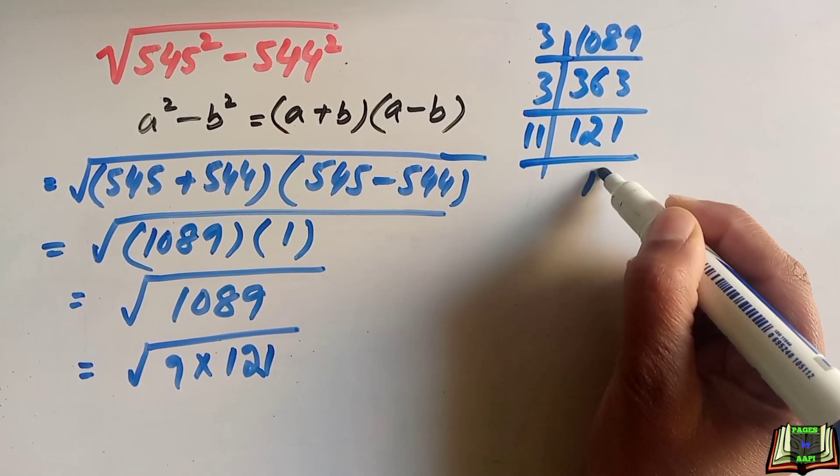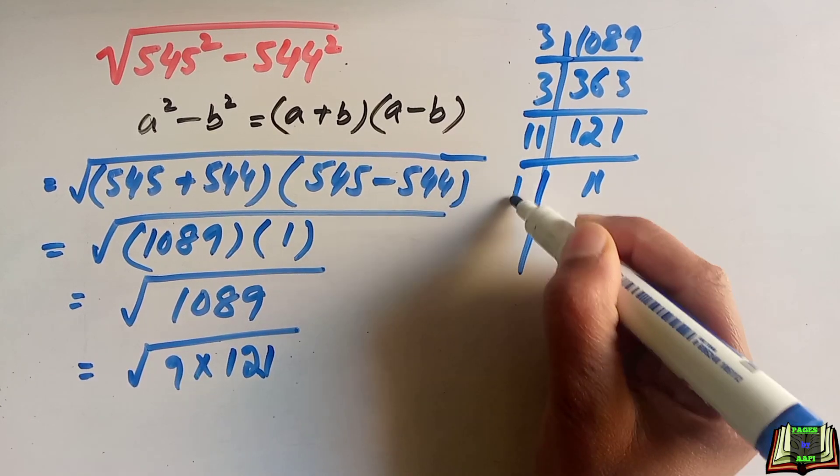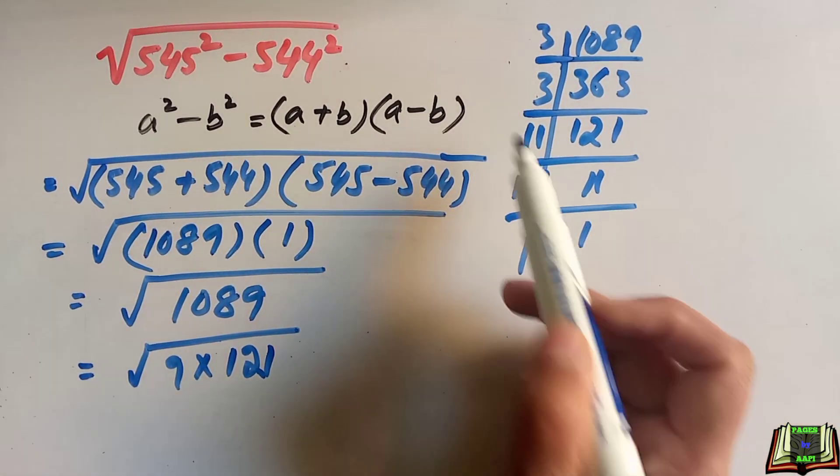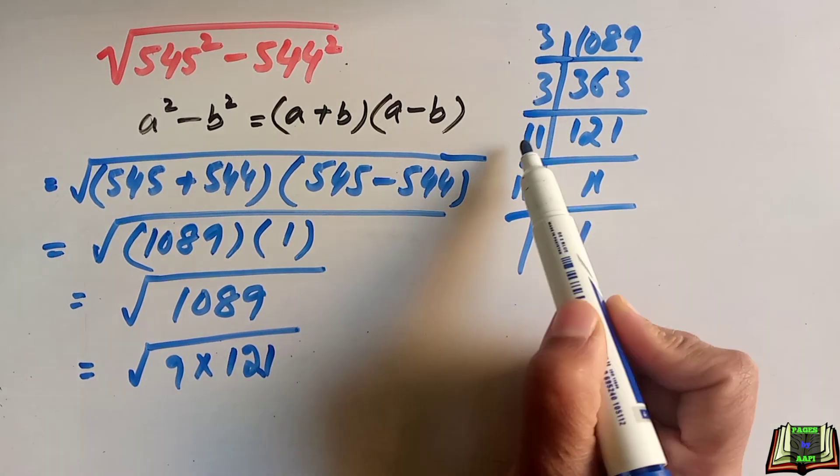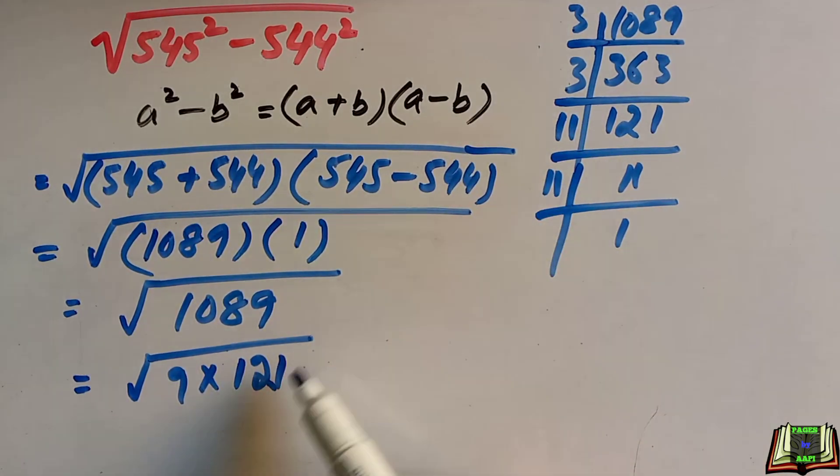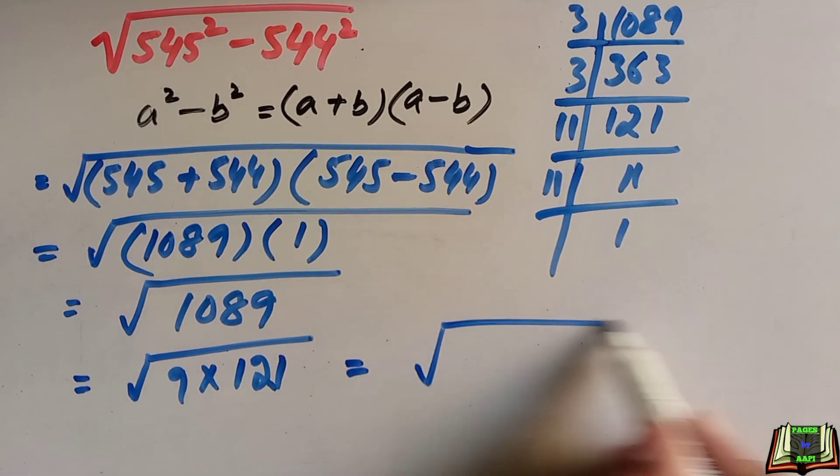So this is 3 times 3 is 9, 11 times 11 is 121. We can write this as 9, which is 3 square, and 121, which is 11 square.